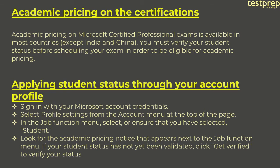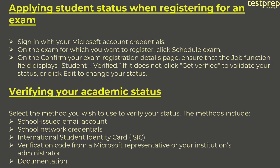Applying student status when registering for an exam. First, sign in with your Microsoft account credentials. Second, on the exam for which you want to register, click Schedule Exam. Third, on the confirm your exam registration details page, ensure that the job function field displays 'Student - Verified.' If it does not, click 'Get Verified' to validate your status, or click 'Edit' to change your status.